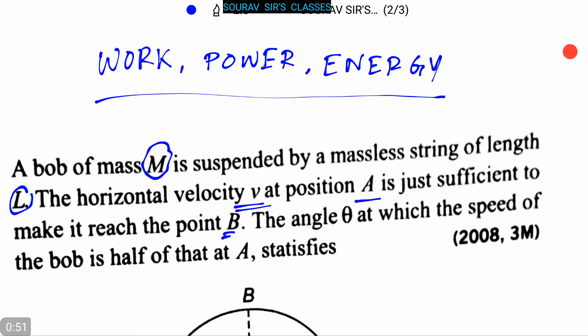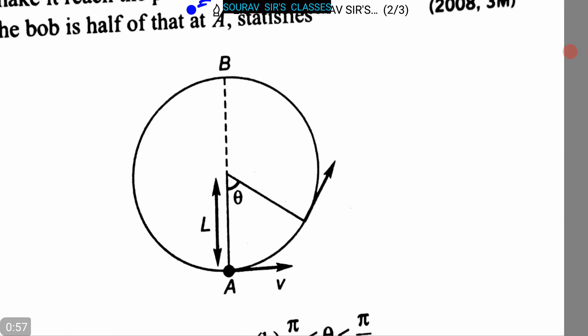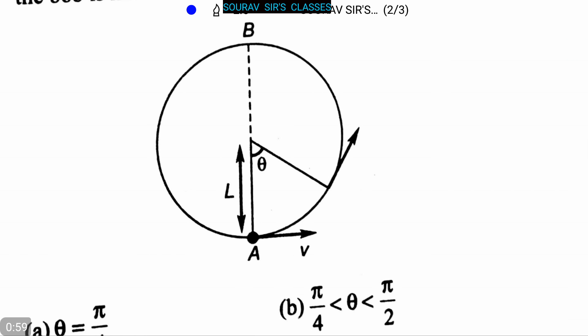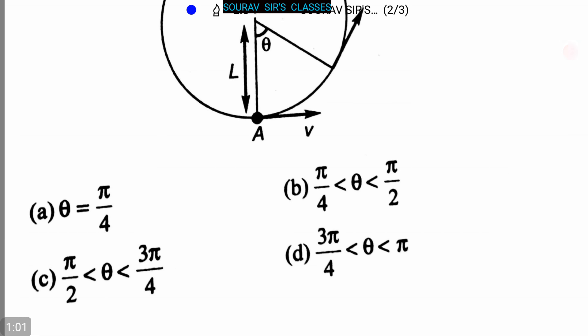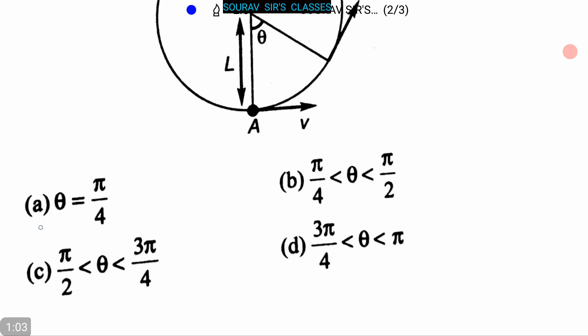The angle theta at which the speed of the bob is half of that at A satisfies - here this figure is given and four options are also given. The options are: (a) theta equals pi by 4, (b) pi by 4 less than theta less than pi by 2, (c) pi by 2 less than theta less than 3 pi by 4, and (d) 3 pi by 4 less than theta less than pi.